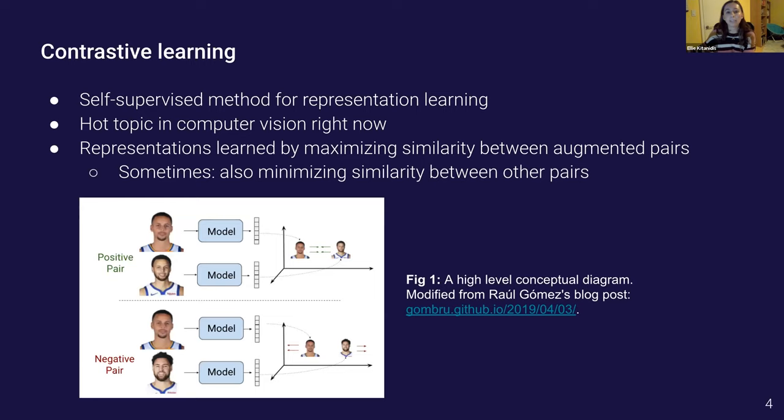So contrastive learning is a self-supervised method for learning representations. Like a lot of ideas in deep learning, the idea of contrastive loss is not really new but it's become a really popular and active area of research recently in computer vision because of its success at learning visual representations. The concept is pretty intuitive. The idea is just that similar inputs should be mapped closer together in representation space and some contrastive frameworks will also explicitly structure their loss functions such that dissimilar inputs are mapped farther apart. You can see this in this very high level conceptual diagram that I've included on this slide.